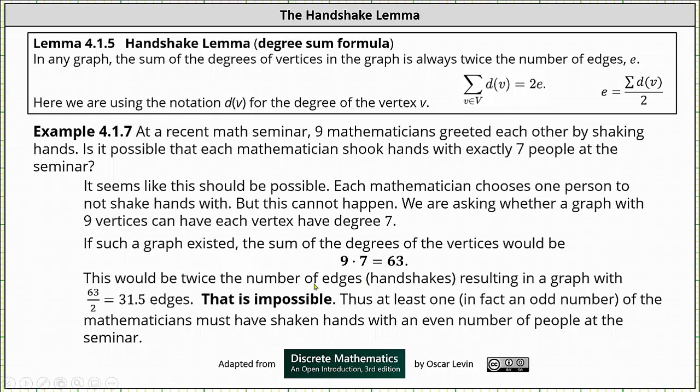This would need to be twice the number of edges, or in this application the number of handshakes, resulting in a graph with 63 divided by 2, or 31.5 edges. But we know the number of edges has to be a whole number, and therefore that is impossible.